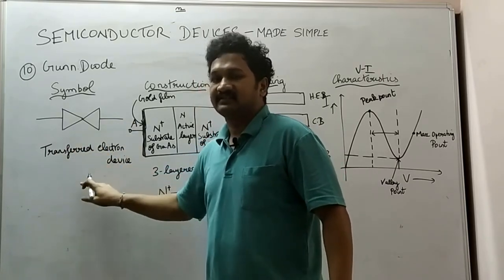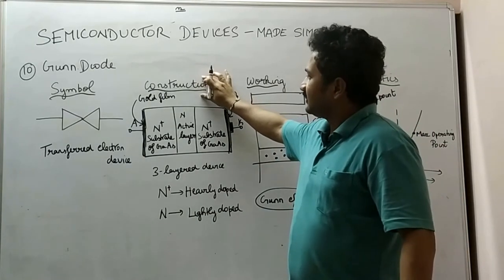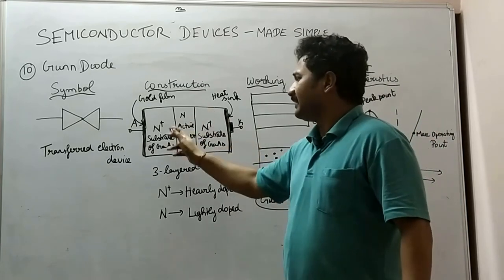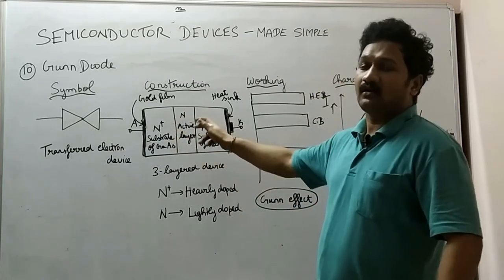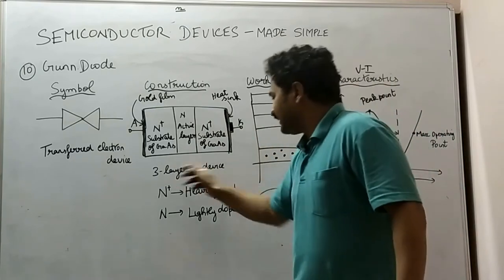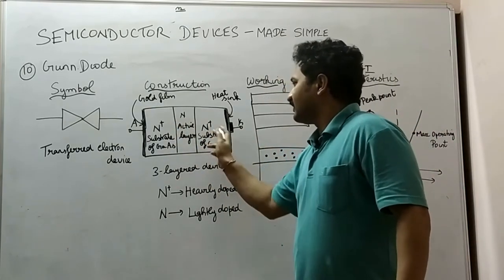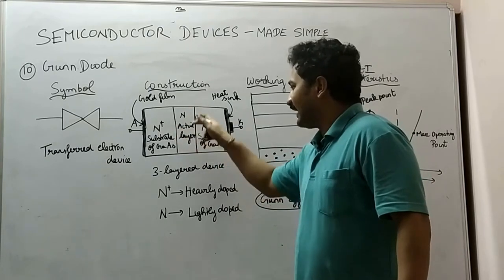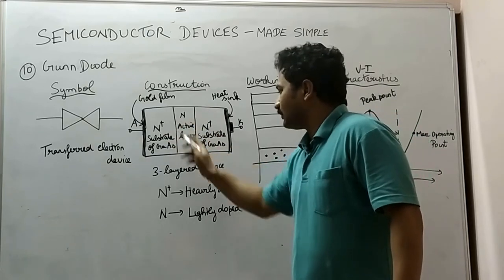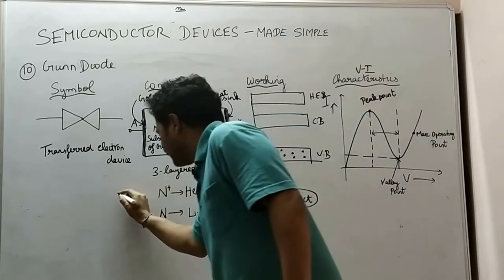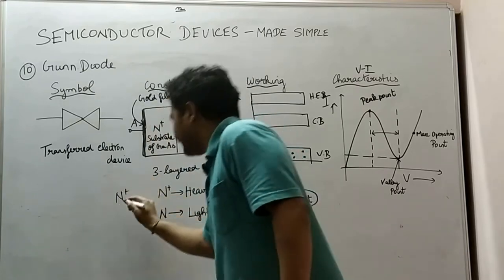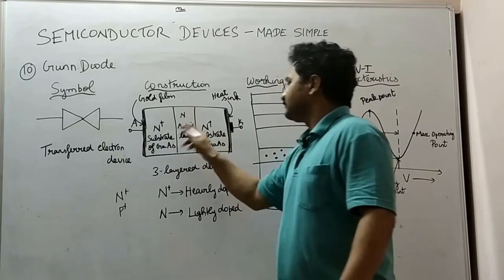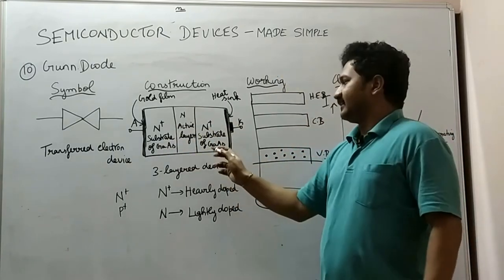From the construction: the Gunn diode is a three-layer device which is made up of n-type semiconductor on all three layers. It has n+ on either side of the active layer, with the center one being the active layer. The n+ notation means it is heavily doped. Both substrates are made up of gallium arsenide.